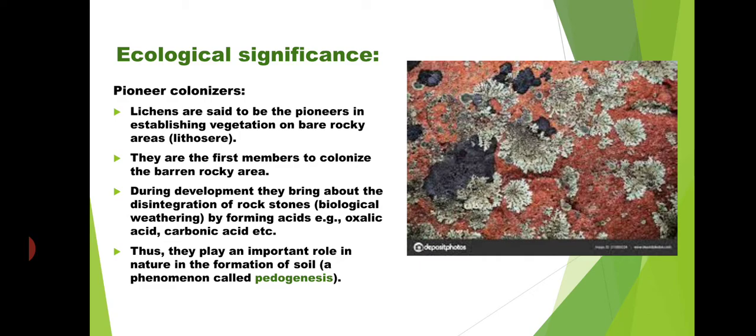Lichens are said to be the pioneers in establishing vegetation on bare rocky areas, that is the lithosphere. The lithosphere refers to the rocky areas, and from this lithosphere soil formation occurs. Lichens are the first members to colonize the barren rocky area — that is crustose lichen, which is already known to grow on rocky surfaces.